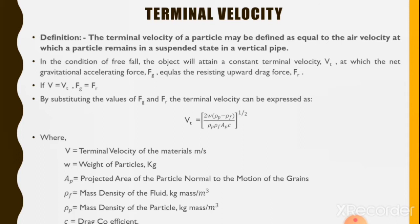Under the condition of free fall, the object will attain a constant terminal velocity Vt at which the net gravitational force Fg equals the resisting upward drag force Fr.